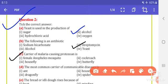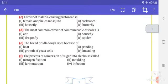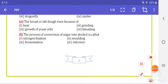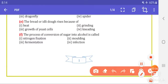The most common carrier of communicable disease: ant, housefly, dragonfly, or spider. Right answer is housefly. The bread or idli dough rises because of heat, grinding, growth of yeast cells, or kneading. The right answer is growth of yeast cells.